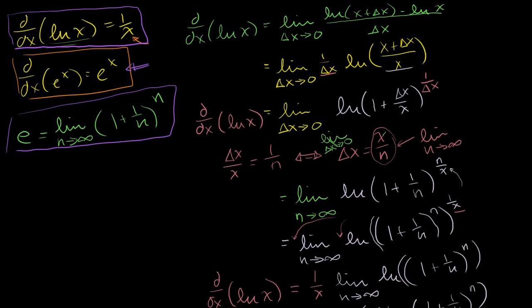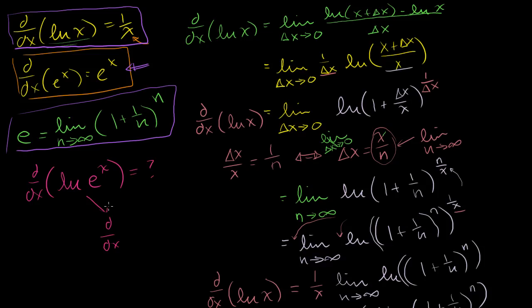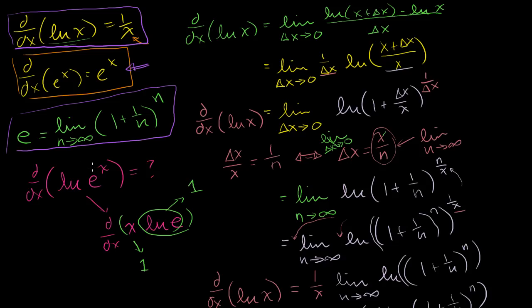So let's do a little exercise. Let's take the derivative of the natural log of e to the x. There are two ways to approach this. The first way: we can simplify — this is the same thing as the derivative of x times the natural log of e. And the natural log of e equals 1, so this is just the derivative of x, which equals 1. In no way did we assume the derivative of e to the x — we just simplified this expression to the derivative of x, because the natural log of e term cancels out.